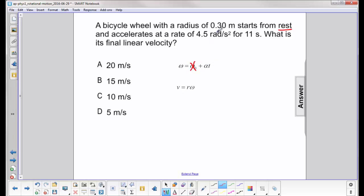For alpha, you put in 4.5 radians per second squared. And for time, you put in 11 seconds. And what you get is, when you multiply them out, your angular velocity is 49.5 radians per second.